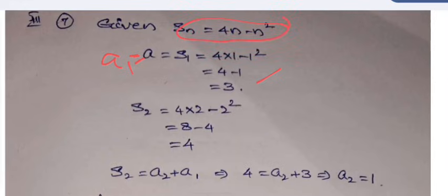To get sum of first two terms, substitute n is equal to 2 in this given sum of n terms. So by substituting n is equal to 2 here, we obtained 4. So S₂ is 4. That means S₂ means first term plus second term's total is S₂.